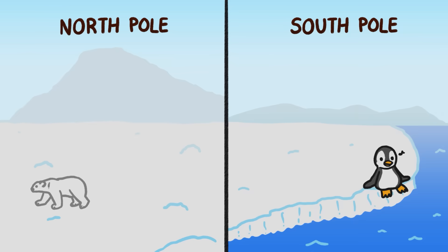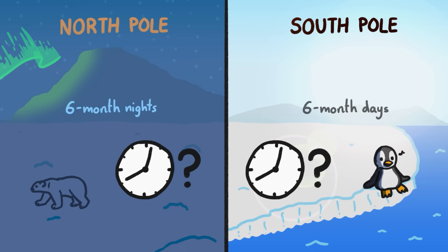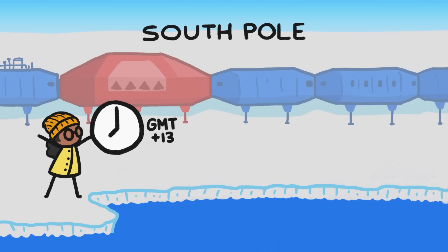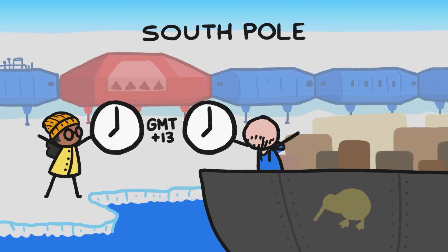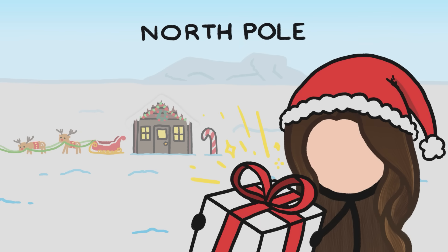Thanks to their locations, the poles only get one yearly sunrise and sunset anyway, so there's not necessarily an obvious time zone choice. Scientists at the South Pole Research Station have chosen a time zone based on convenience. They use New Zealand Standard Time, because that's where all their supplies come from. And, well, there's mostly just ice at the North Pole, and the only resident there keeps insisting there's no time like the present.